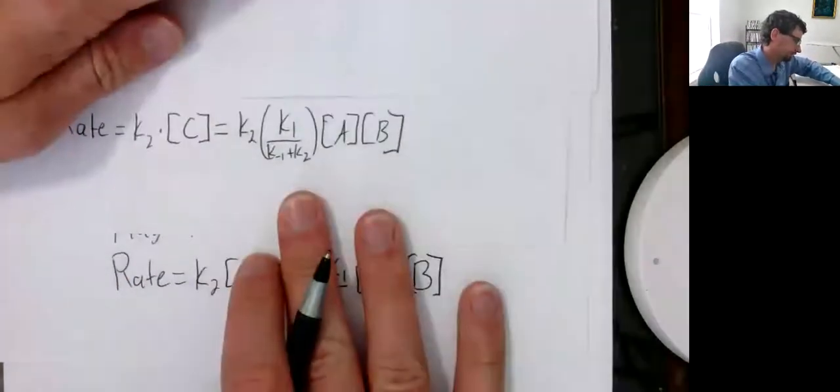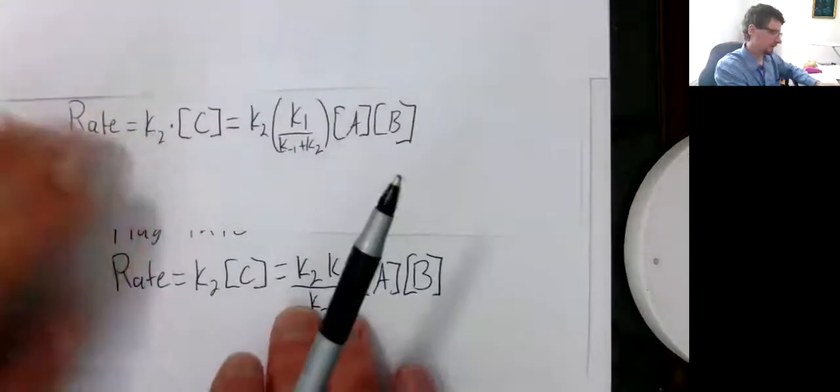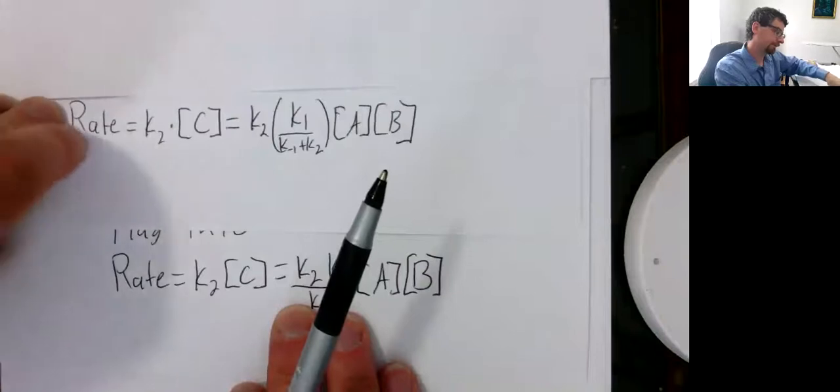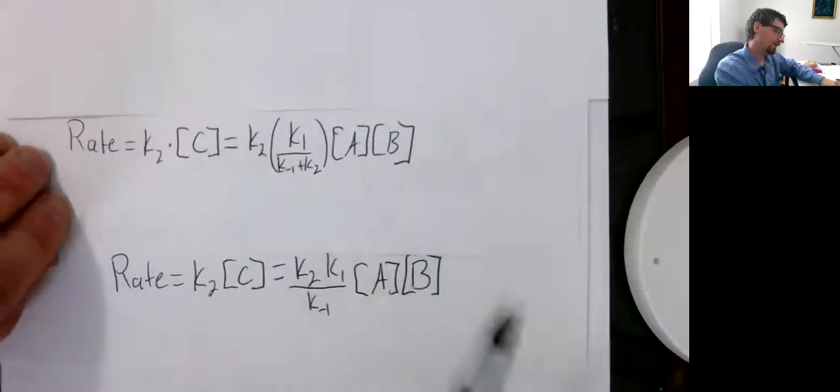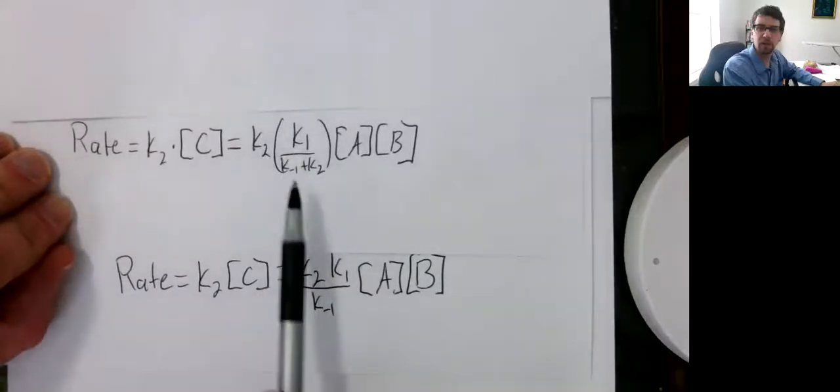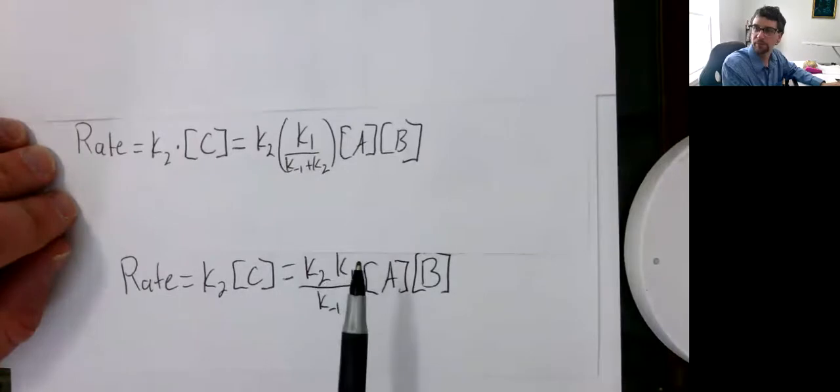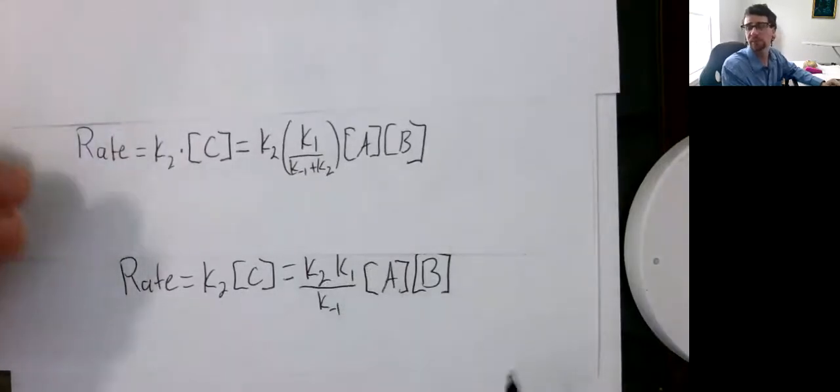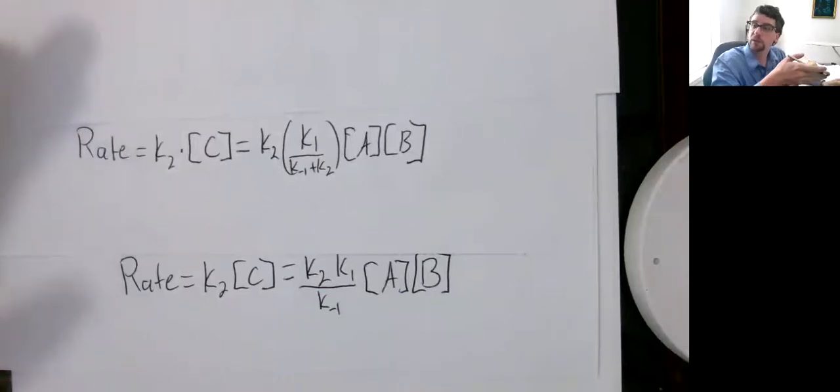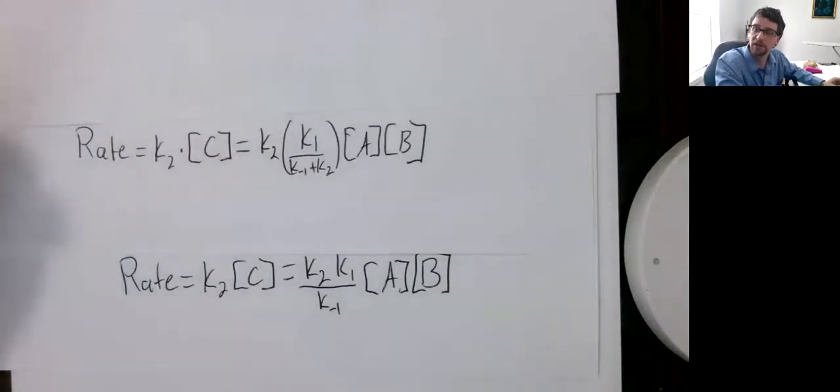This other equation is what we get with the steady state approximation. You can see, based upon these different derivations, these different models, you get a different expression. How do you know which one is right? Well, you can't ever prove a mechanism correct, but you can disprove a mechanism or provide evidence that a mechanism is incorrect. What you would do is you would actually compare the rate that you derived to an experimental rate and see which one is the closest. One that is really far away from experiment is probably not plausible. One that's close is a plausible mechanism.